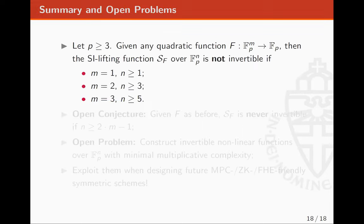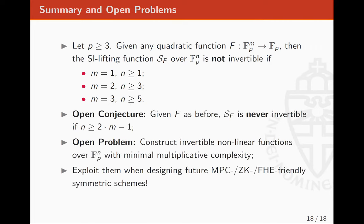To summarize: when P is prime, if you have a quadratic function from FP^M to FP, then the shift-invariant lifting function S_f over FP^N is not invertible for M=1 and N≥1, M=2 and N≥3, and M=3 and N≥5. We propose the open conjecture that S_f is never invertible when N≥2M-1. We were not able to prove this for M≥4. We leave open the problem of constructing new invertible nonlinear functions over FP^N minimizing multiplicative complexity, and suggest exploiting these nonlinear layers for future MPC, zero knowledge, or homomorphic-encryption-friendly symmetric schemes.